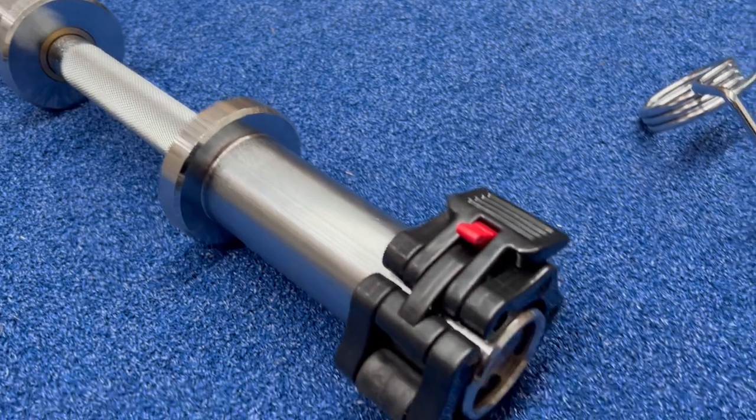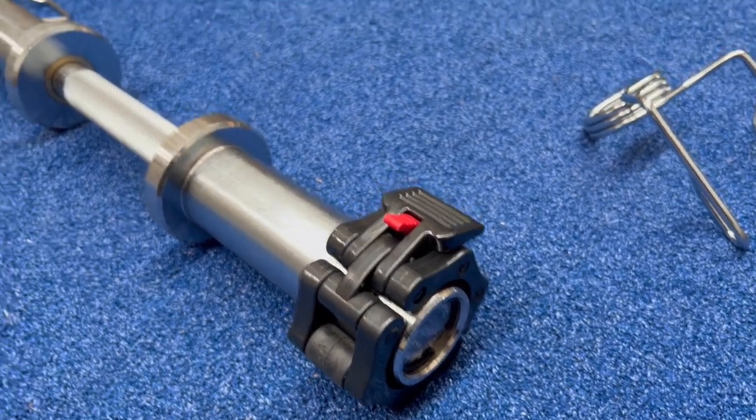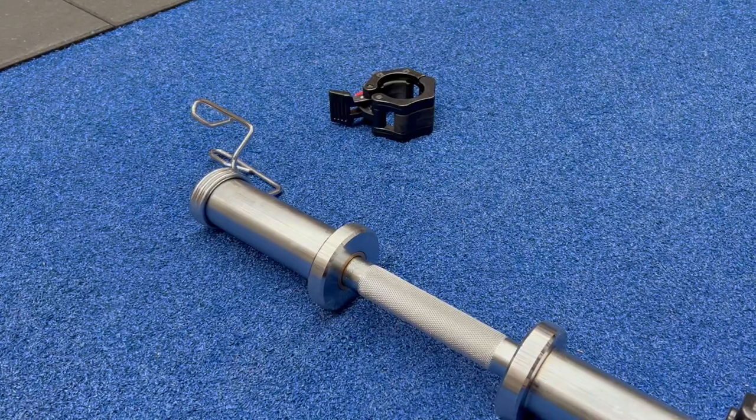If you option the lock jaws, you get four lock jaw collars, so two pairs to go with two dumbbell handles.